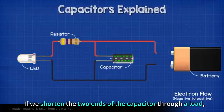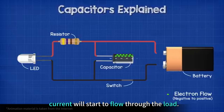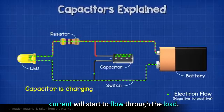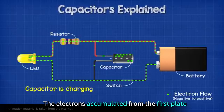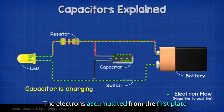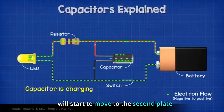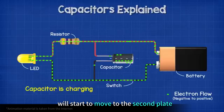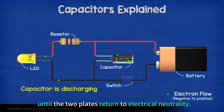If we connect the two ends of the capacitor through a load, current will start to flow through the circuit. The electrons accumulated on the first plate will start to move to the second plate, until the two plates return to electrical neutrality.